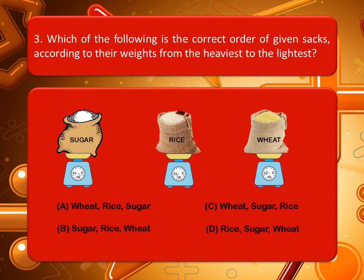Which of the following is the correct order of the given sacks according to their weights from the heaviest to the lightest? Look at the picture very carefully, read the options, and give your answer in the comment box. The correct answer is option A: wheat, rice, and sugar.